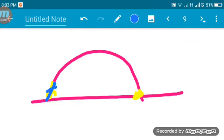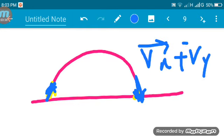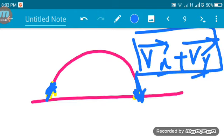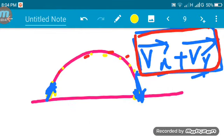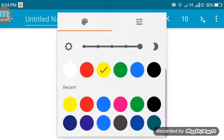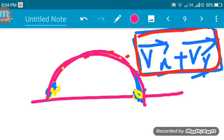After reaching the maximum height, the projectile descends. Throughout this motion, we analyze how Vx and Vy behave. The horizontal and vertical components determine the complete trajectory. Now let's move to the mathematical equation for projectile motion.